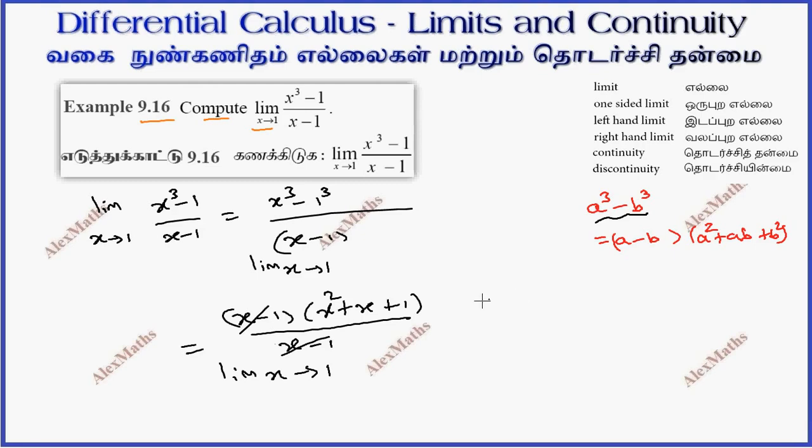Limit extending to 1, substitute 1: 1² + 1 + 1 equals 3. Total answer is 3. This is the method using factorization, but there is a special formula.